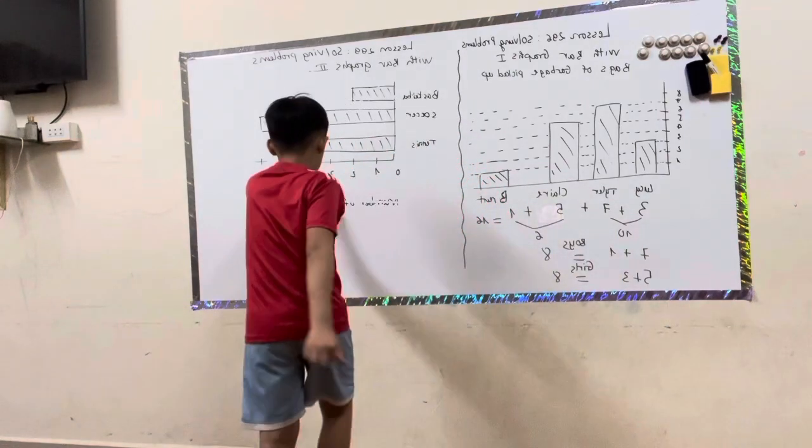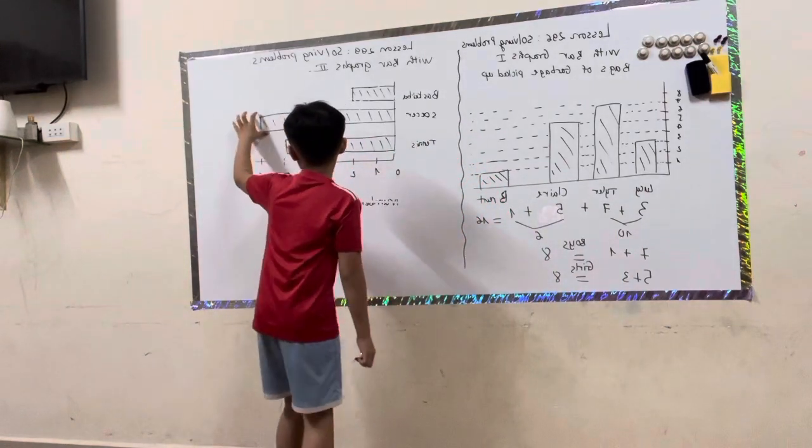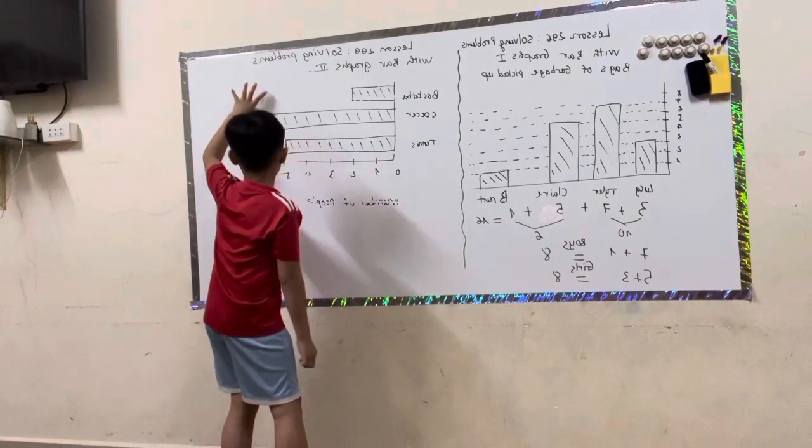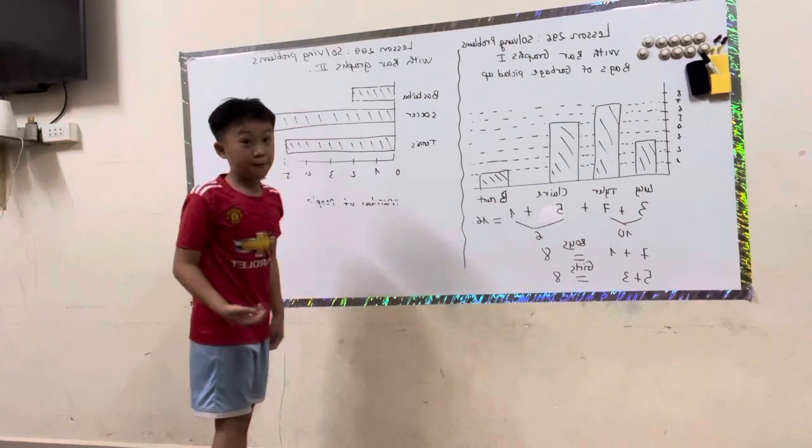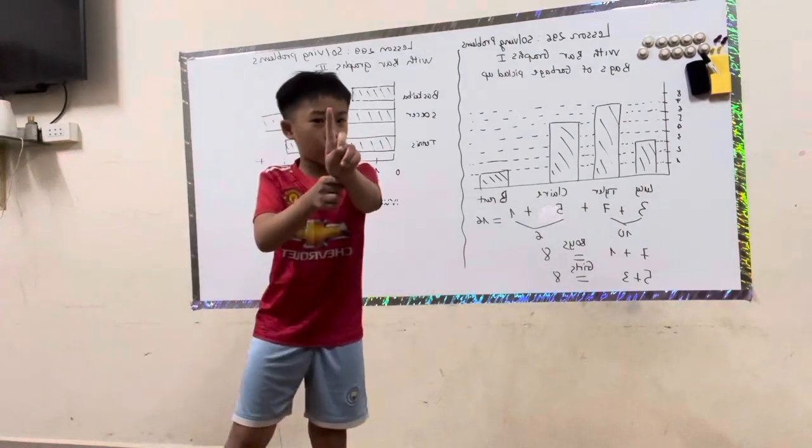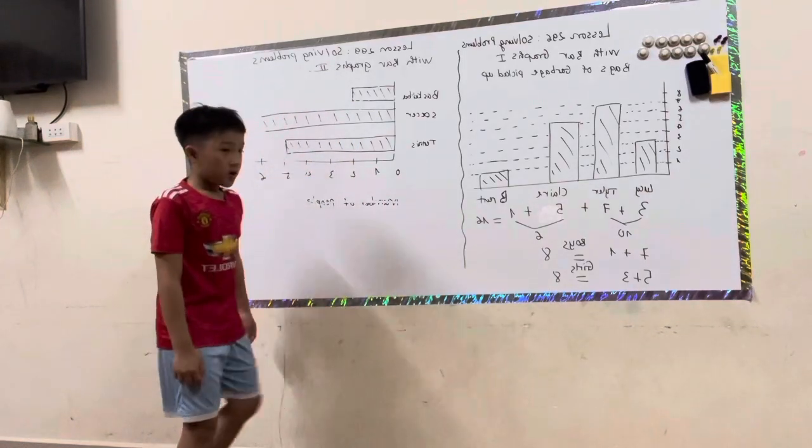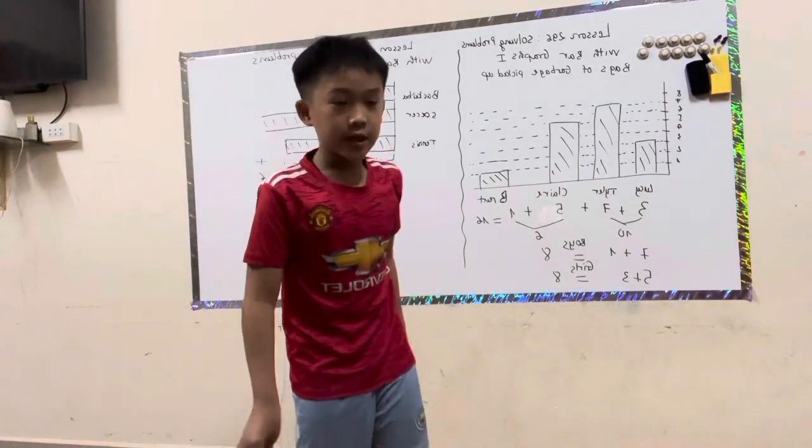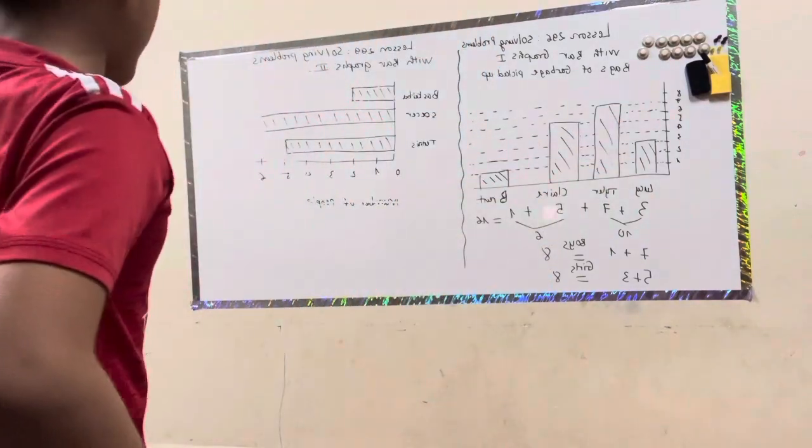So you see, soccer is the best. Tennis is very popular too. So we have one more people to join the group of tennis, it will be like soccer. So today we learned about solving problems with bar graphs one and two.